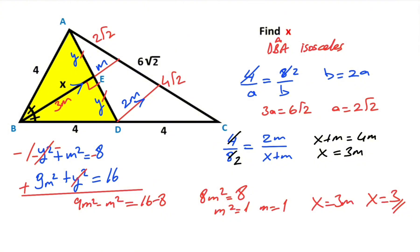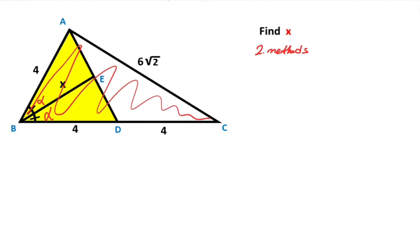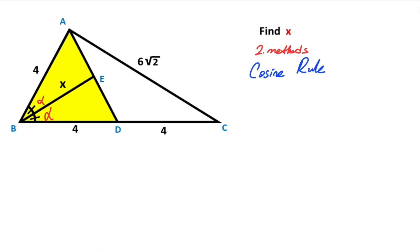This was the first method. Now we will calculate the value of X using the second method. First of all, let's call these two equal angles alpha. If you focus on the biggest triangle, we can apply the cosine rule. Therefore (6 root 2) squared equals 4 squared plus 8 squared minus 2 times 4 times 8 times cosine 2 alpha.